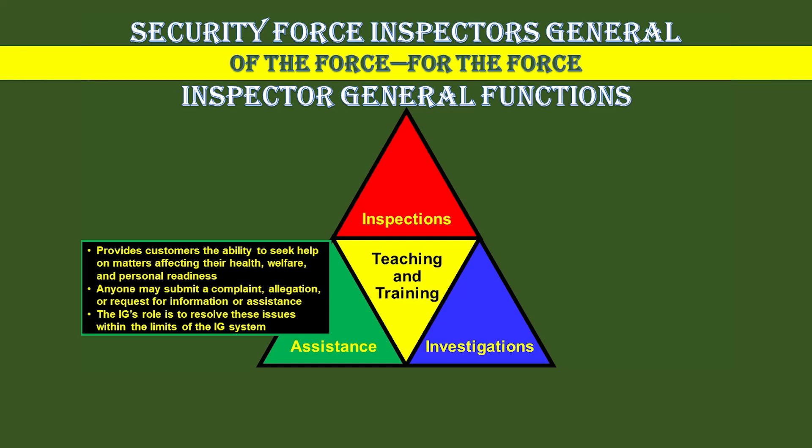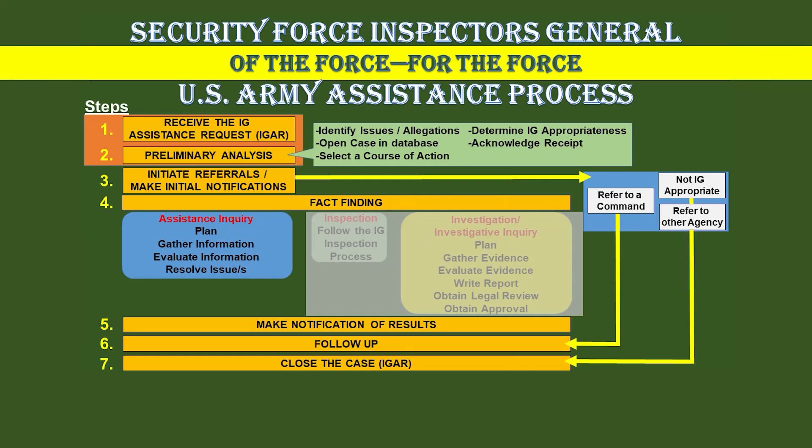The Inspector General Assistance Process, or IGAP, is a seven-step process we use for all assistance cases and investigations. We will provide an example to demonstrate how to use the IGAP. It is important to understand that steps one and two will always be completed, and the outcome of step two will determine how to proceed through the rest of the process.